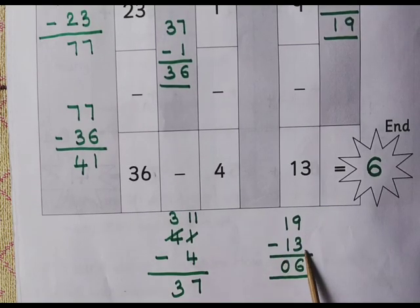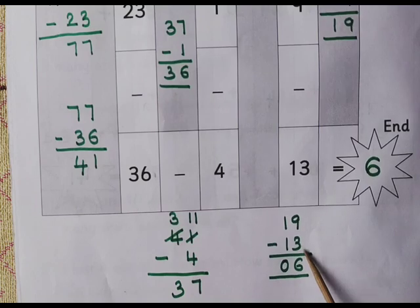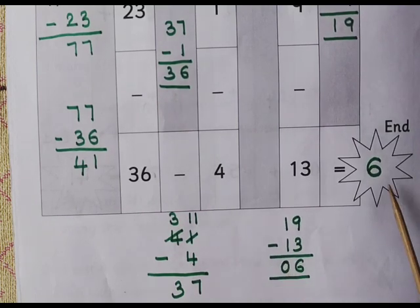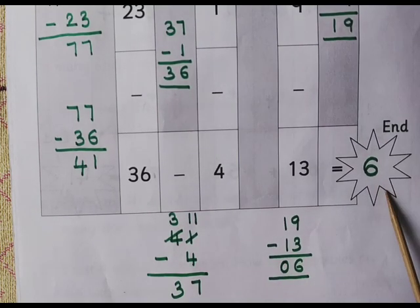19 minus 13. 9 minus 3 is 6. 1 minus 1 is zero. The final answer is 6.